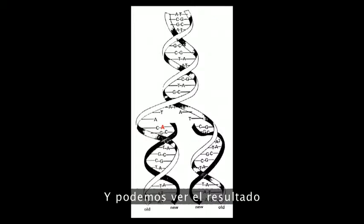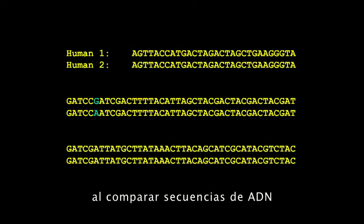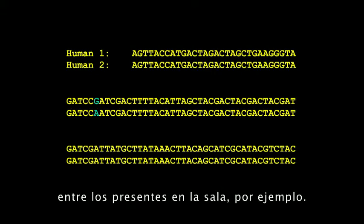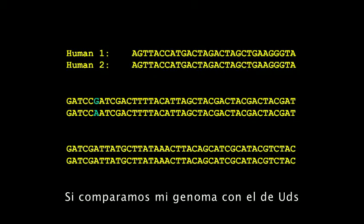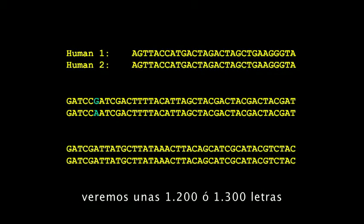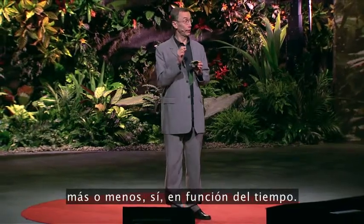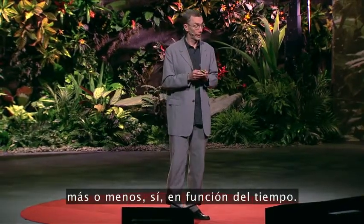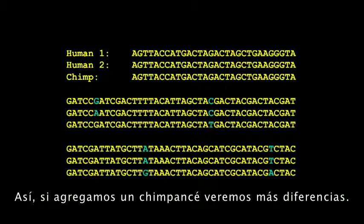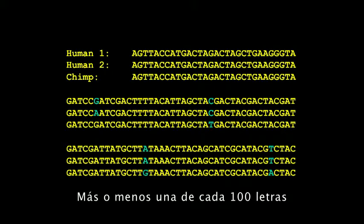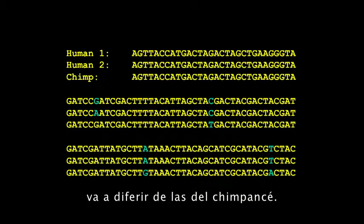We can then see the result of such mutations when we compare DNA sequences among us here in the room, for example. If we compare my genome to a genome of yours, approximately every 1,200 to 1,300 letters will differ between us. And these mutations accumulate approximately as a function of time, so if we add in a chimpanzee, we will see more differences — approximately one letter in a hundred will differ compared to a chimpanzee.